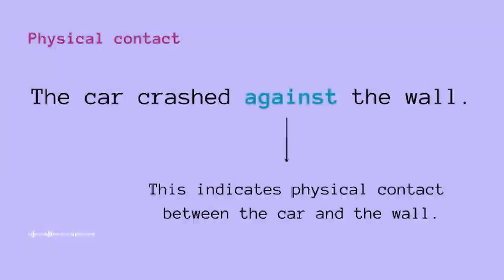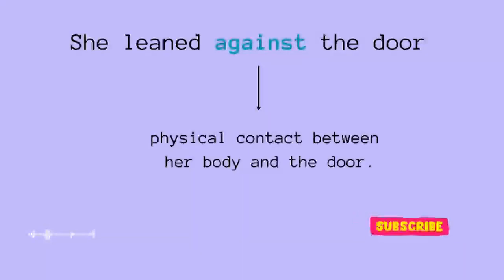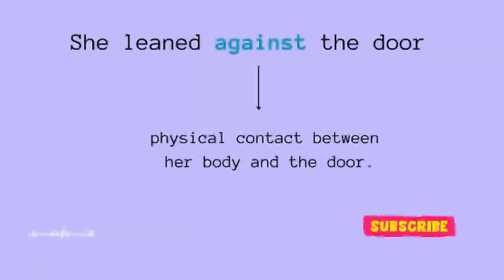Physical contact doesn't mean only between people — it can be between things as well. So when two things make contact, we can use 'against.' Another example: 'she leaned against the door.' This describes physical contact between her body and the door — the door was supporting her, like preventing her from falling.